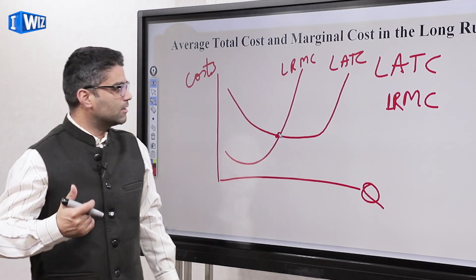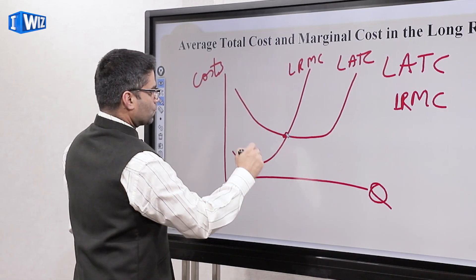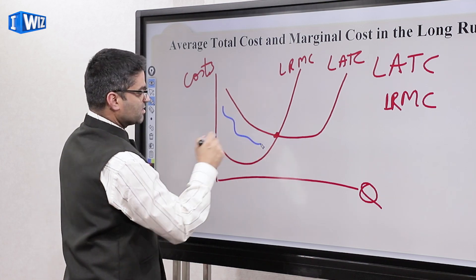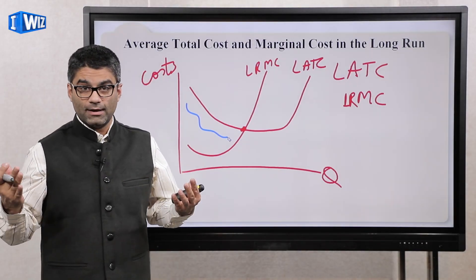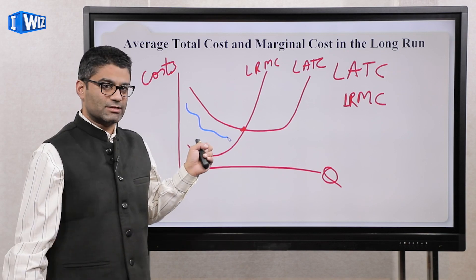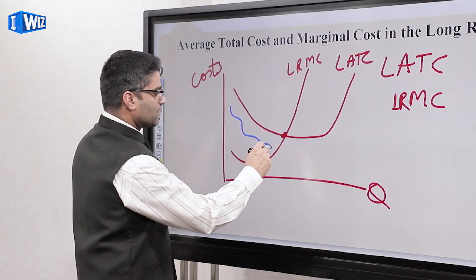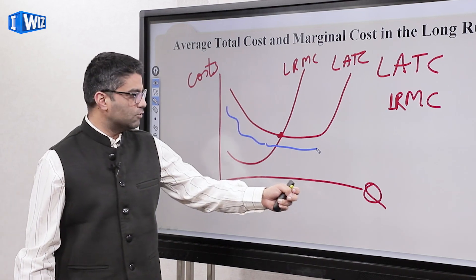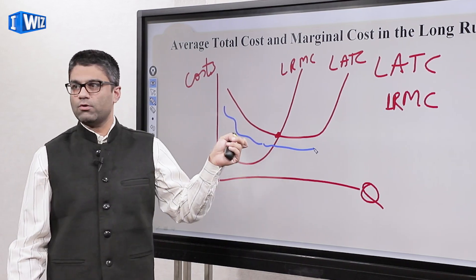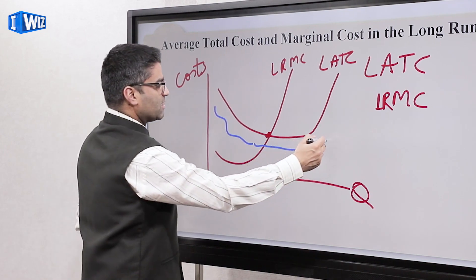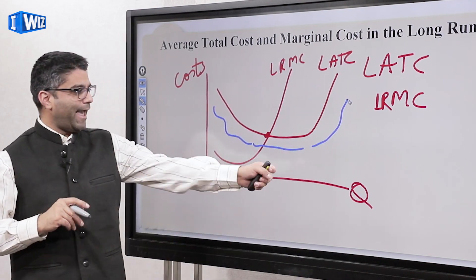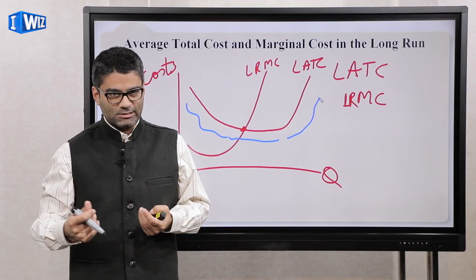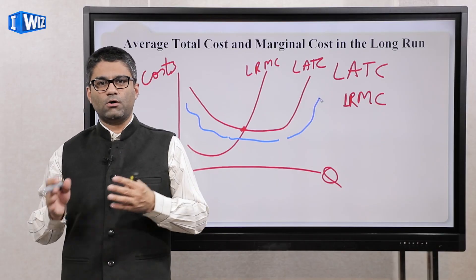Up until the quantity where ATC is declining, the firm is experiencing economies of scale — produce more and your average costs are falling. Then there's a range where the firm experiences constant returns to scale, where increasing output doesn't change average costs. Eventually, after that output level, the firm is subject to diseconomies of scale and ATC starts rising. The graph looks very similar to the short run, but try to understand what the differences are between short and long run.